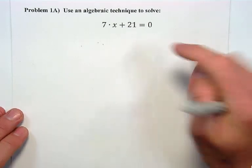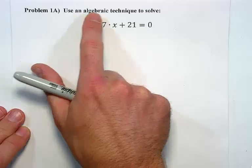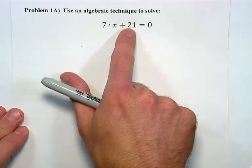Let's take a look at the first problem in this lesson. We begin by reading the problem in full. Use an algebraic technique to solve 7x + 21 = 0.